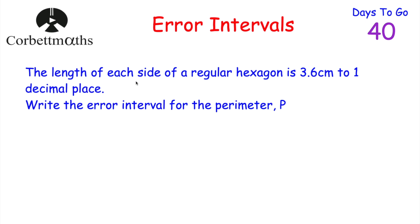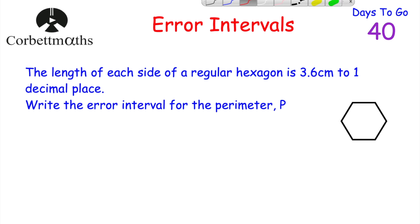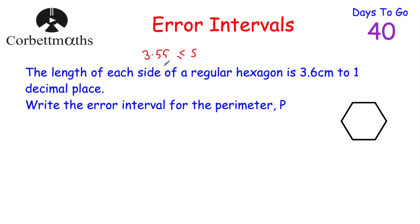Our next question says: the length of each side of a regular hexagon is 3.6 centimetres to one decimal place. Write down an error interval for the perimeter, P. Let's do a little sketch of a regular hexagon — all sides have the same length. We want to consider the lowest possible perimeter and what the perimeter can go up to. Let's call each side S. The error interval for each side S is: 3.55 ≤ S < 3.65 centimetres.